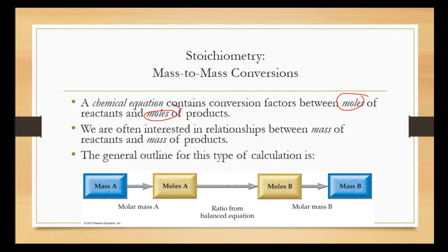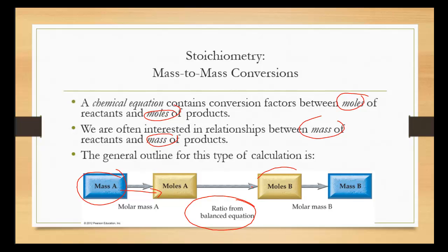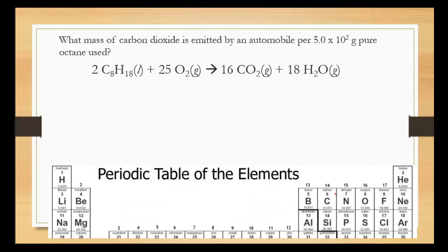We are often interested in the relationships of the mass of the products and the mass of the reactants. The general type of this calculation is to go from the mass of one compound to the moles, then use the coefficients of the ratio of the balanced equation to go to moles of another compound, and figure out the mass of it. We're going to go through several examples.